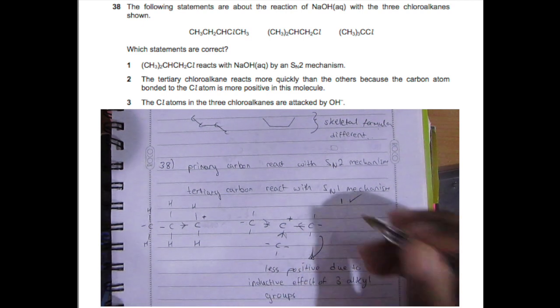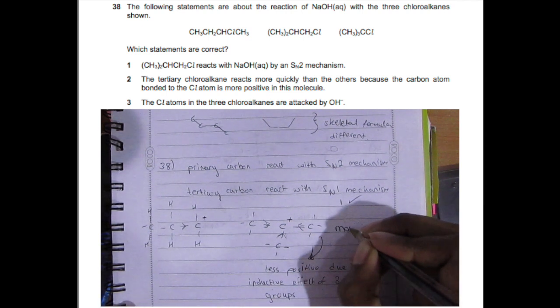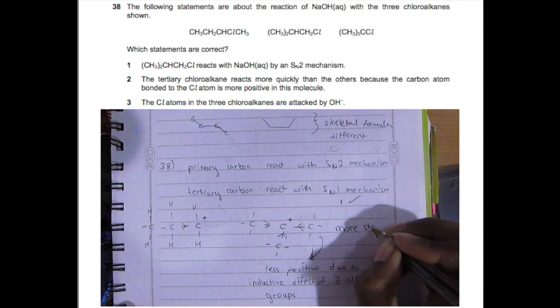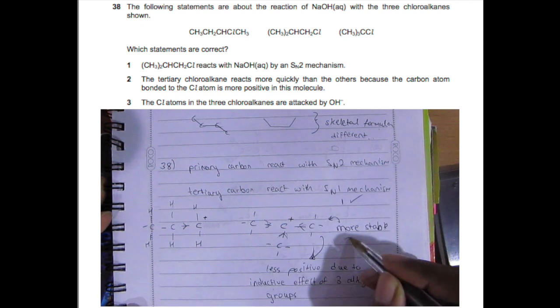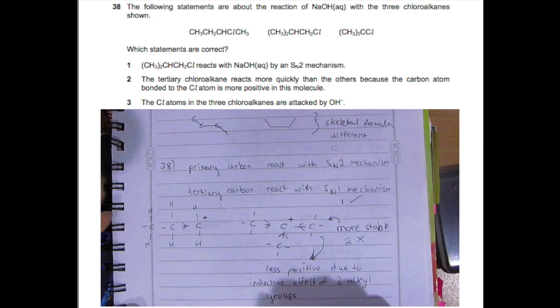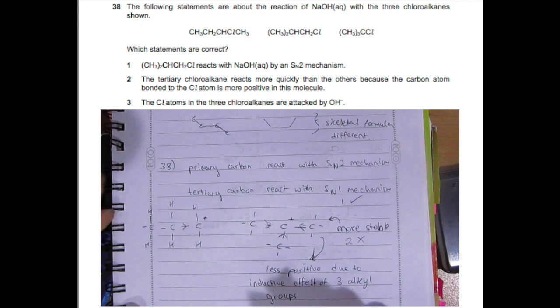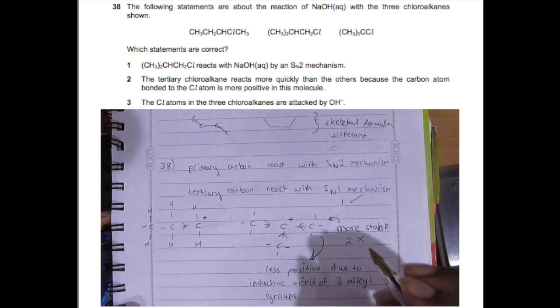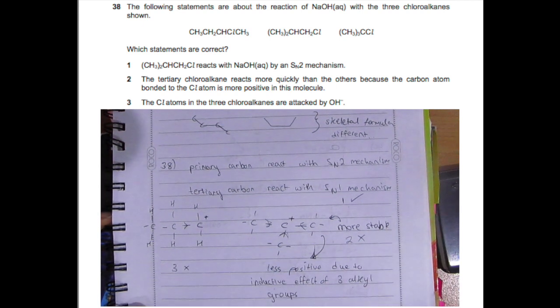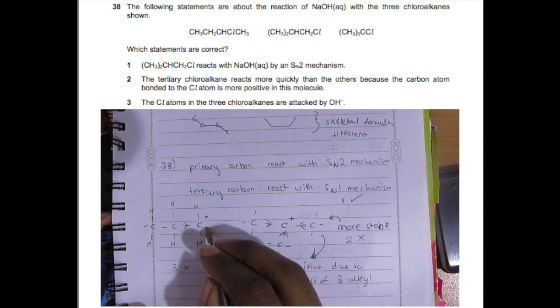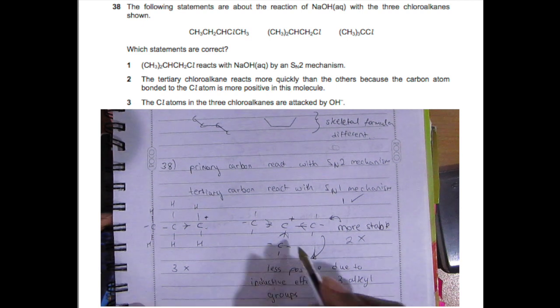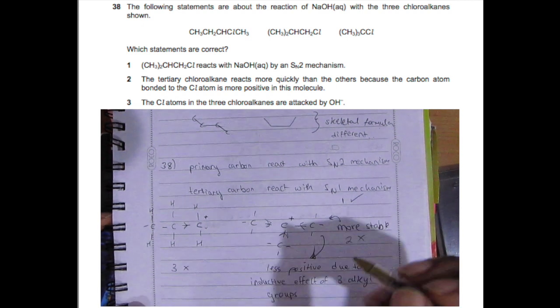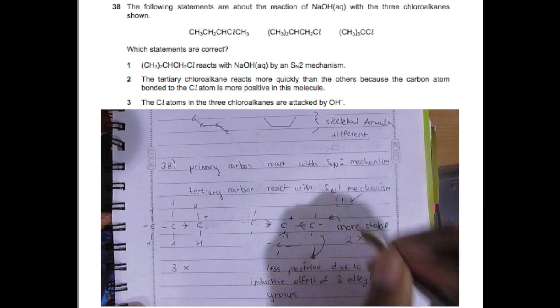The tertiary chloroalkane reacts more quickly? Actually, the tertiary chloroalkane will react more slowly because it's more stable than the primary one due to the three carbons surrounding it. The carbon becomes less positive due to the inductive effect—they donate electrons to the atom they're attached to, making it more stable. The more stable a compound is, the less likely it will react. The chlorine atom in three chloroalkanes is attacked by the hydroxide ion? Not true—it's the carbon that's attacked, not the chlorine.